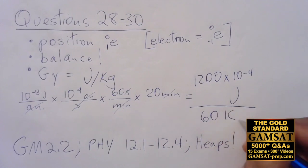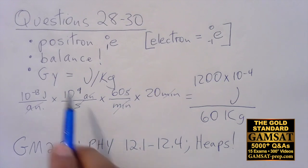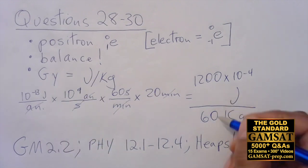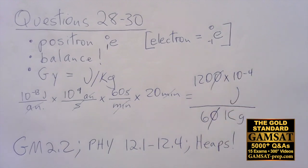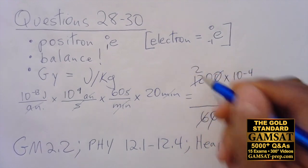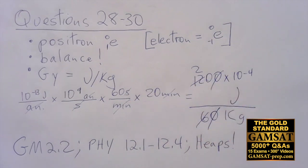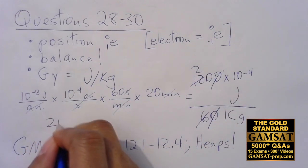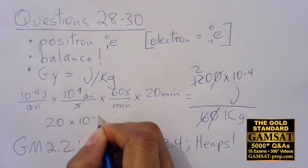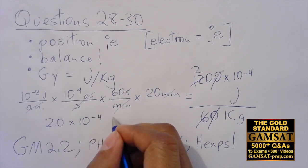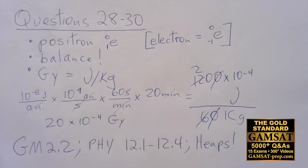That would be equal to the grays because it's joules per kilogram. I have one zero that I'll remove there, I have a six that becomes a two, so I have 20 times 10 to the minus four grays. So minus 4 it's like I go one, two, three, four.